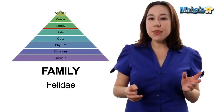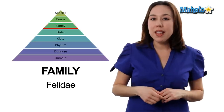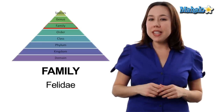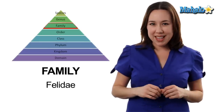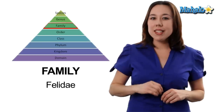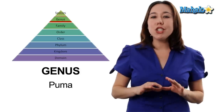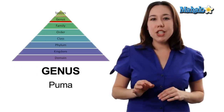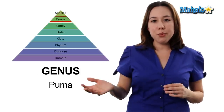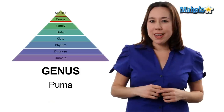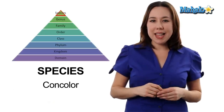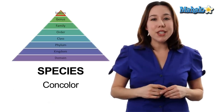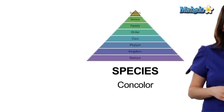Next we have family — family Felidae. Family Felidae is going to be all big cats. Next on the list is genus. Genus is the Puma part of their scientific name. And of course last is the species: concolor.